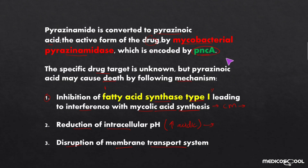Regarding how Mycobacterium tuberculosis develops resistance to pyrazinamide: it is mainly due to mutation in the PNCA gene. Mutation in this PNCA gene develops resistance towards pyrazinoic acid by the mycobacterium.